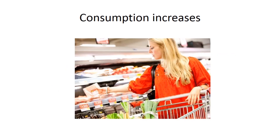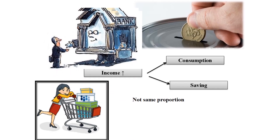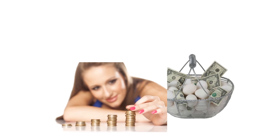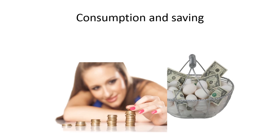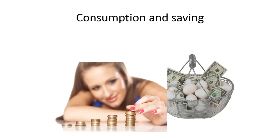It does not mean that consumption expenditure falls with an increase in income. The increased income will be divided in some proportion between consumption expenditure and saving. This is not in the same proportion, but some proportion. The whole increased income is not spent on consumption — the remaining is saved. An increase in income always leads to an increase in both consumption and saving.